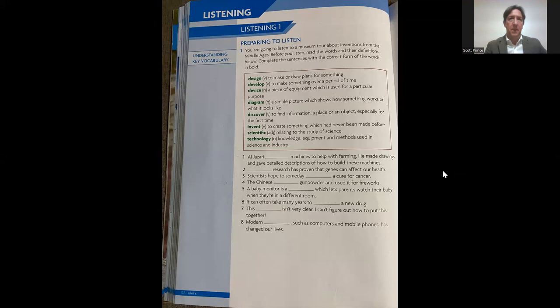All right. So I'm going to just go through these questions now. So number one: Al-Jazari designed machines to help with farming. He made drawings and gave detailed descriptions of how to build these machines. So the correct answer is designed. Number two: Scientific research has proven that genes can affect our health. Number three: Scientists hope to someday discover a cure for cancer. Number four: The Chinese invented gunpowder and used it for fireworks.